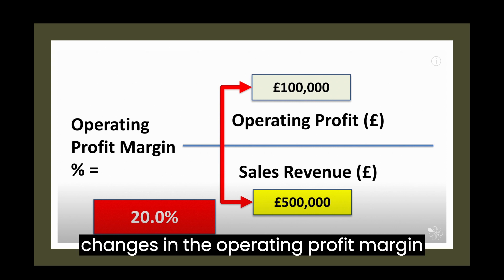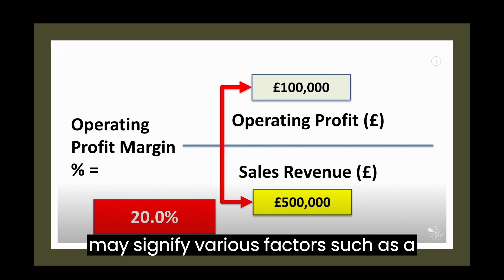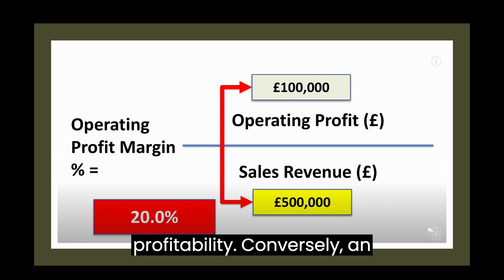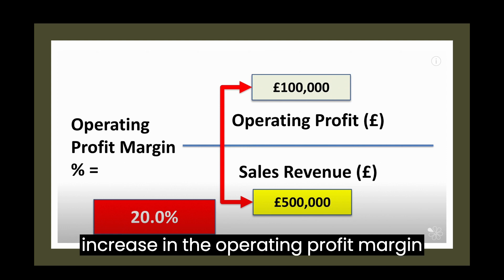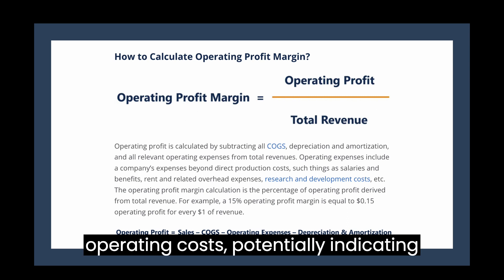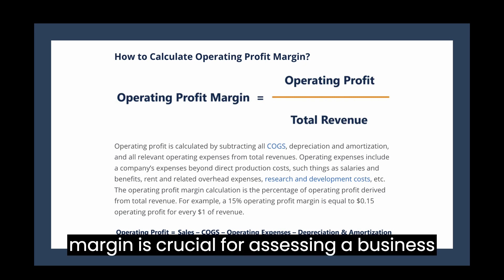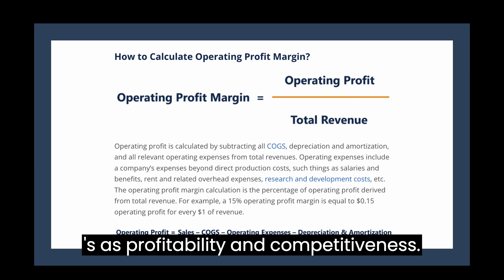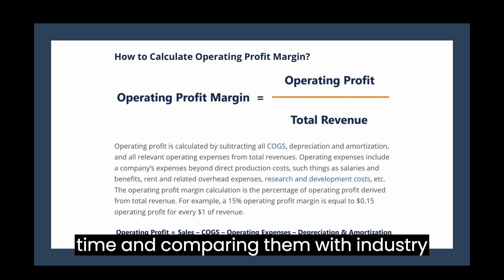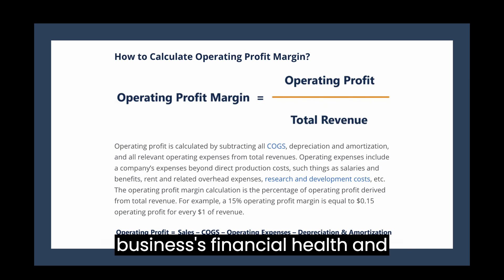Analyzing changes in the operating profit margin over time is vital. A decrease may signify various factors such as a decline in gross profit margin or higher operating costs, both of which impact profitability. Conversely, an increase in the operating profit margin could result from an improved gross profit margin or better control of operating costs, potentially indicating enhanced business performance. Understanding operating profit and its margin is crucial for assessing a business's profitability and competitiveness. Monitoring changes in these metrics over time and comparing them with industry benchmarks and competitors' performance can provide valuable insights into a business's financial health and efficiency.